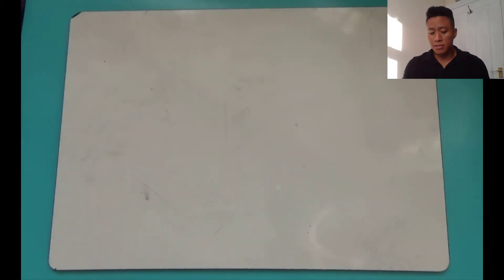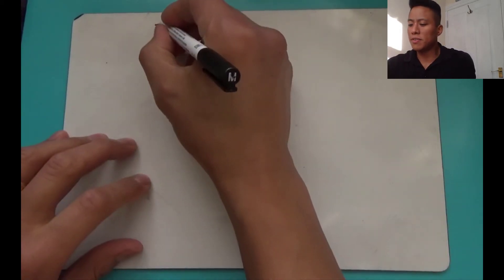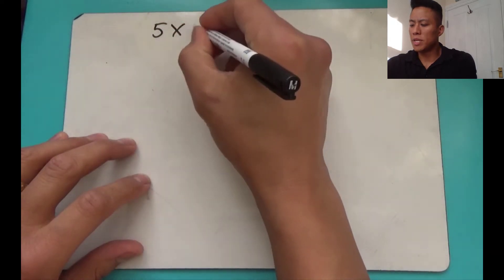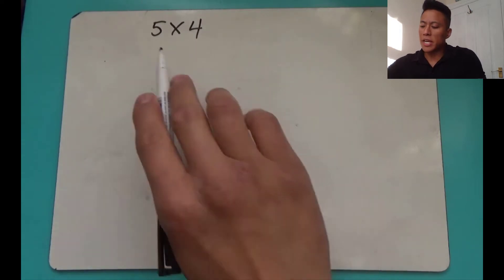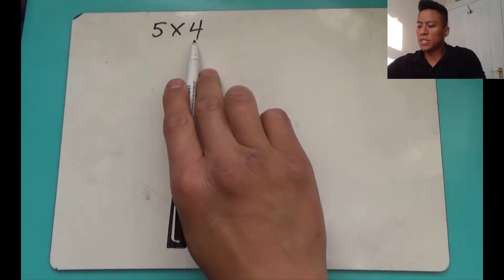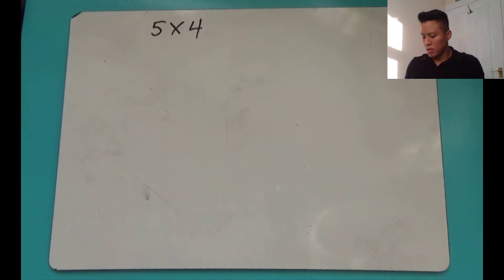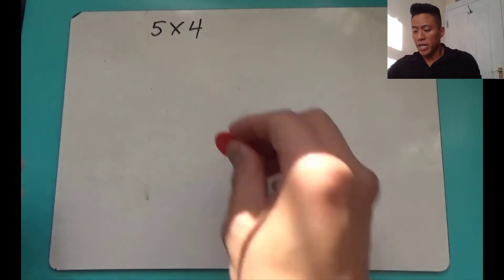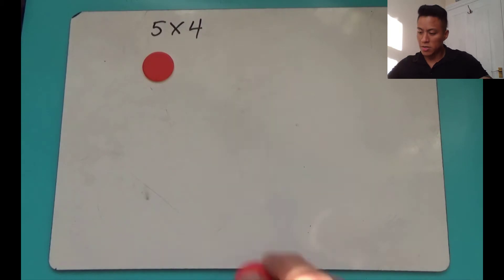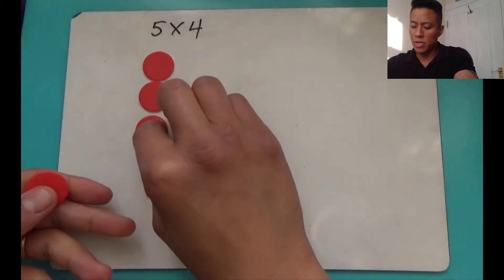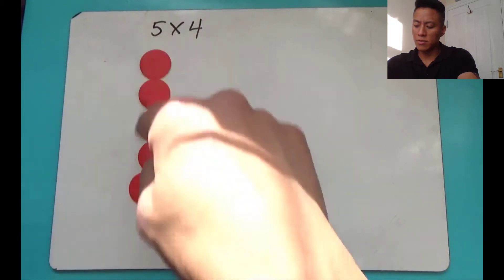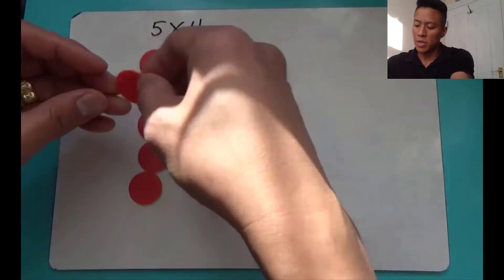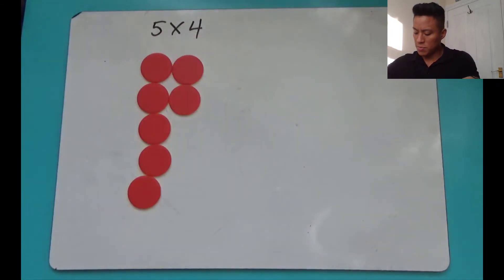Right, so let's use five multiplied by four. It's like saying we're going to have five, four times. So let's use an array — we've got five here, one two three four five. That's only one time; we're going to have five four times.